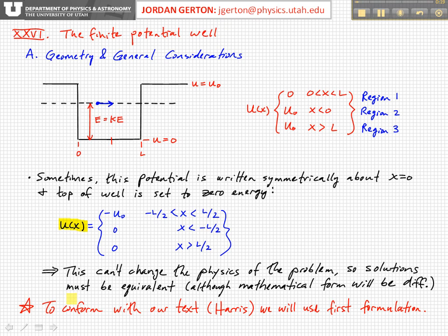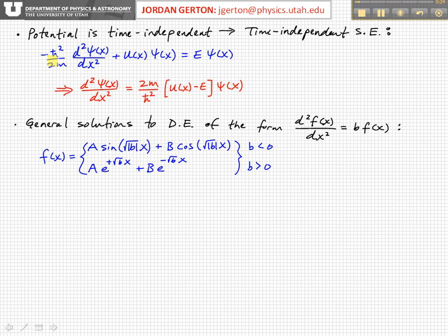Then we use the time independent Schrödinger equation, which I've written right here. Minus h bar squared over 2m, second derivative of psi with respect to, second derivative of the spatial part of psi with respect to x, plus the potential times psi is equal to E times psi.